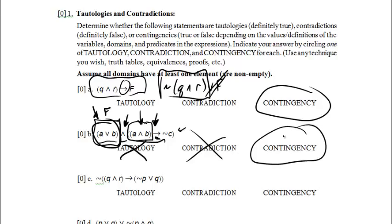Notice you could also have used logical equivalences on this problem. If I were doing that, the first thing I would do is get rid of the conditional on the right-hand side, then simplify until I can tell whether it's a tautology, contradiction, or contingency. There are lots of methods that work well.